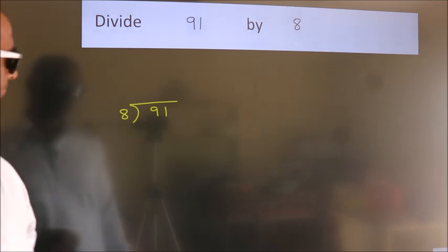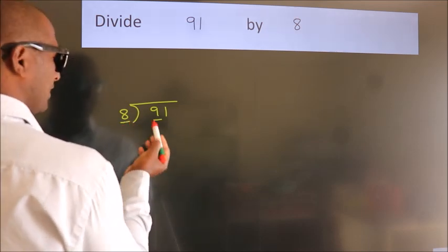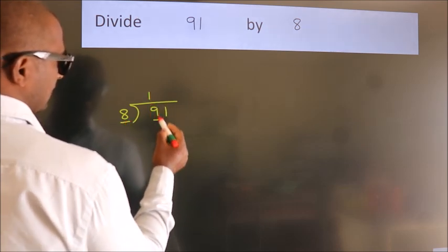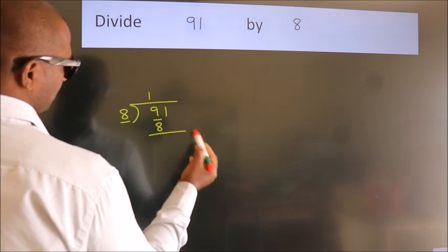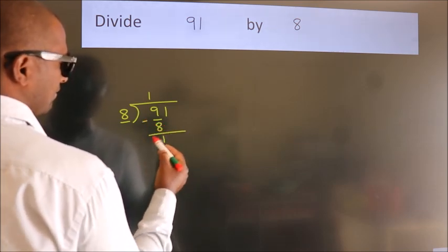Next. Here we have 9, here 8. A number close to 9 in 8 table is 8 once 8. Now, we should subtract. We get 1.